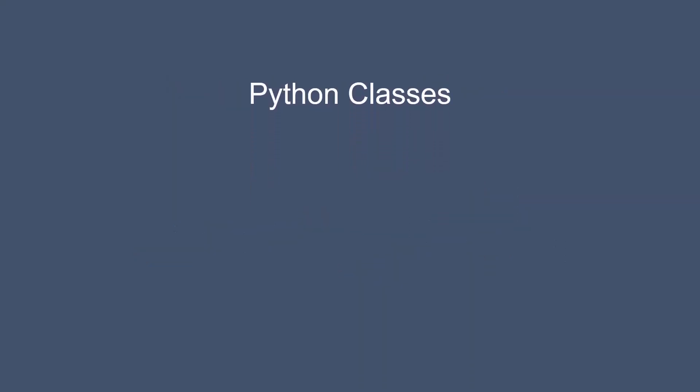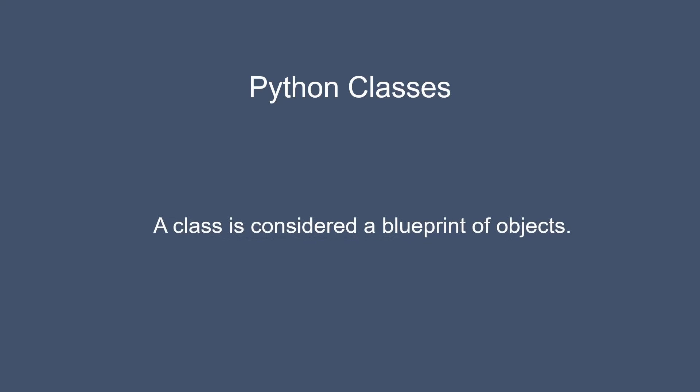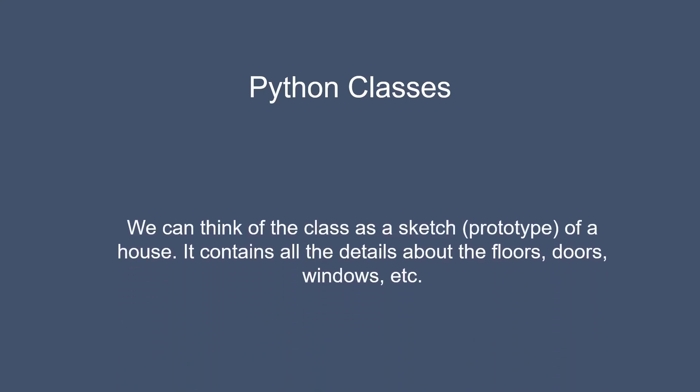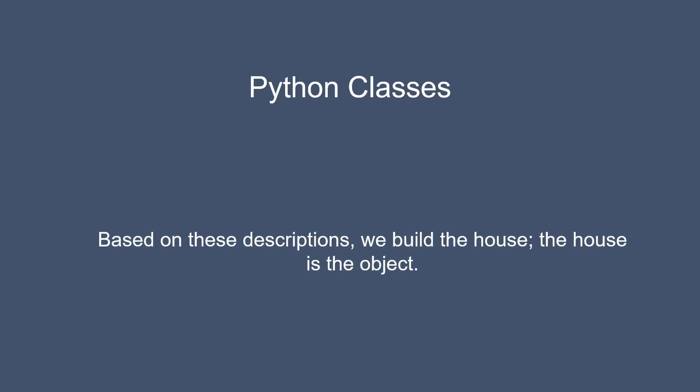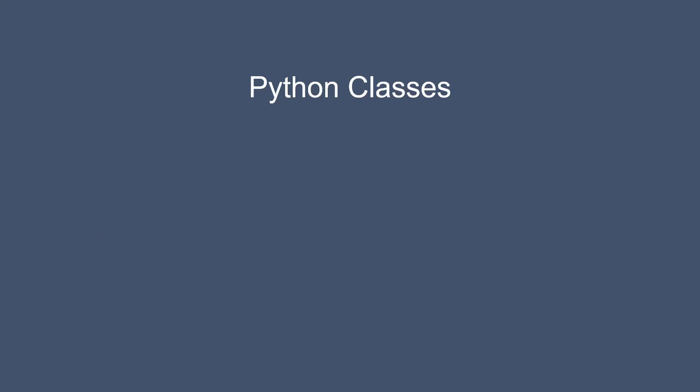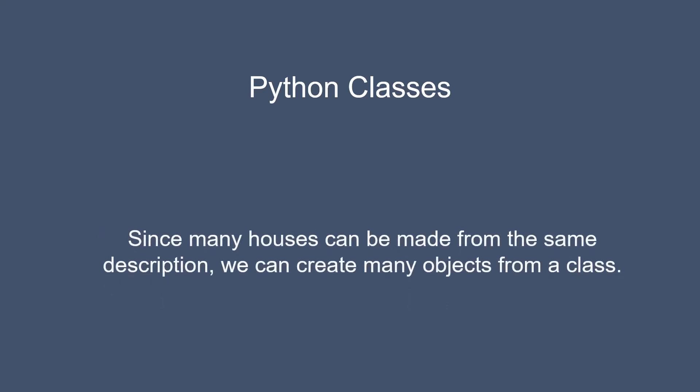A class is considered a blueprint of objects. We can think of the class as a sketch or prototype of a house. It contains all the details about the floors, doors, windows, etc. Based on these descriptions, we build the house. The house is the object. Since many houses can be made from the same description, we can create many objects from a class.